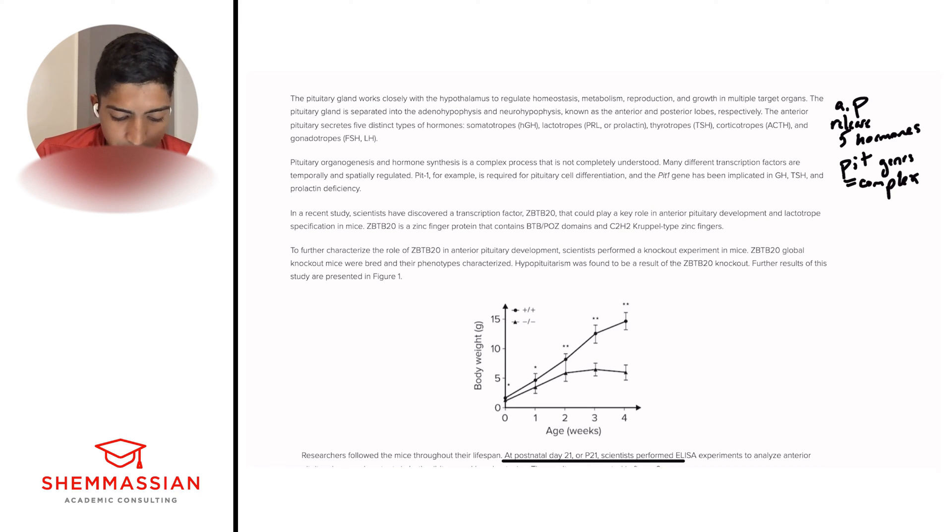Next, in a recent study, scientists discovered a transcription factor ZBTB20 that could play a key role in anterior pituitary development and lactotrope specification in mice. ZBTB20 is a zinc finger protein that contains BTB-POZ domains and C2H2 Krüppel-type zinc fingers. So a lot of details, we're not worried about it. What is the main idea? I'll just write Z20 equals anterior pituitary development. This is really how I write it. It doesn't matter if anyone else understands it. I like to use simple words, abbreviations, symbols. It makes me save time, and if you understand it, that's what matters.